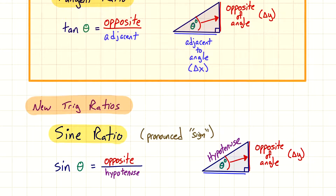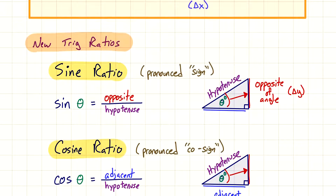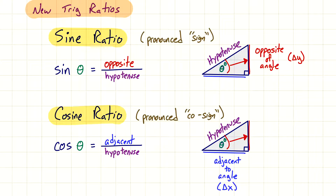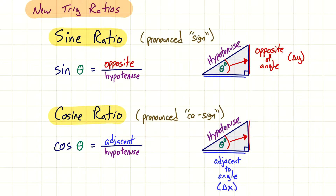The other new trig ratio is the cosine. Looking very similar to the other ratios, cosine — you'll notice it has 'sine' in it. The 'co' in front is short for complement, so this is the complement of sine. Complementary angles add up to 90 degrees, so we'll see a connection between sine and cosine. The calculator button is 'cos', and the ratio is adjacent over hypotenuse.